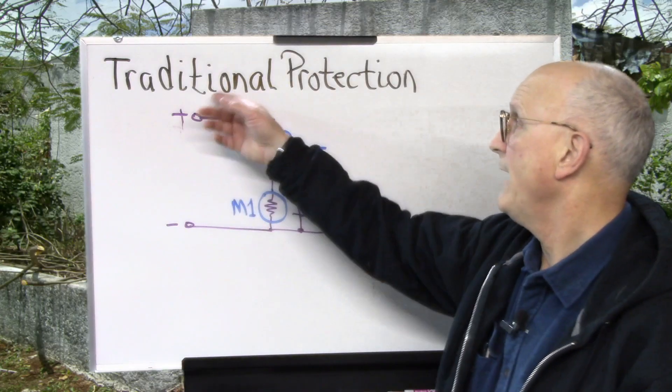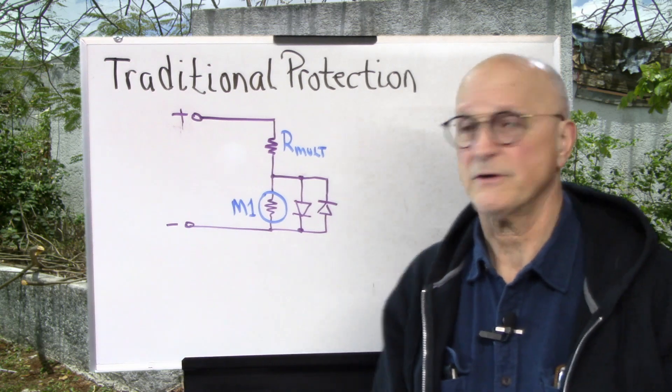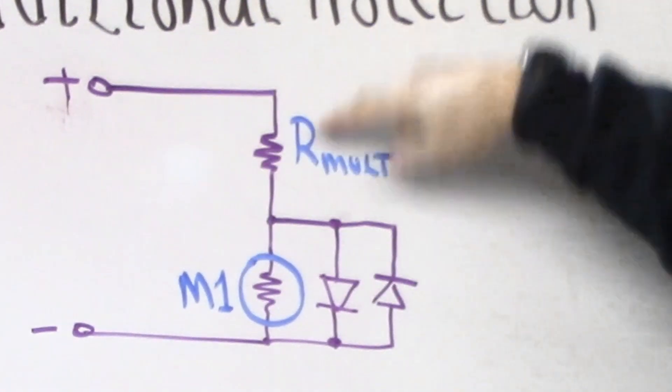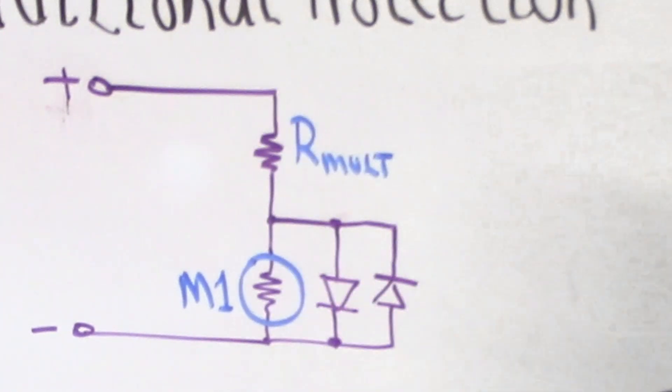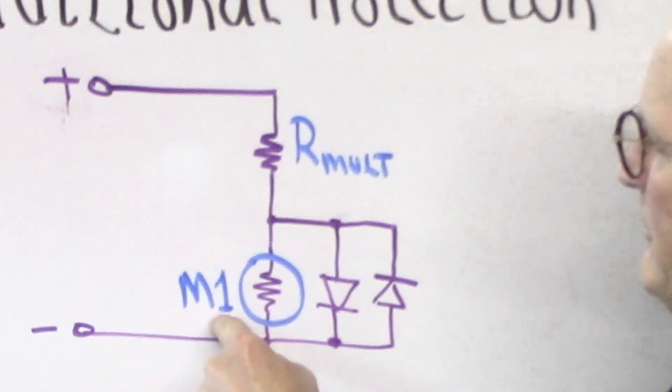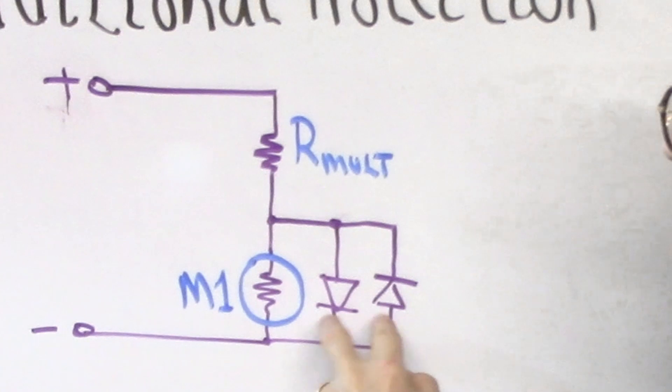Now we can do some bench experiments to see how all of this plays out in a simple protection circuit. So here we have the traditional simple meter protection circuit. We have the input, the positive input, through the multiplier resistor to the meter movement. We're showing the internal resistance of the meter movement. And the meter protection circuit is a pair of side-by-side parallel diodes facing opposite directions. Let's see how this performs in protecting our meter using a bench experiment.